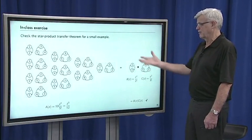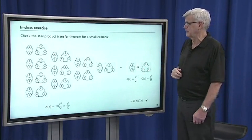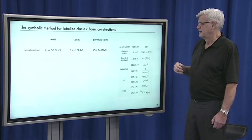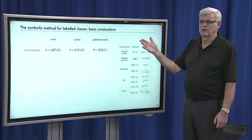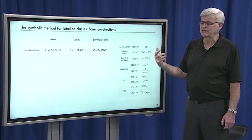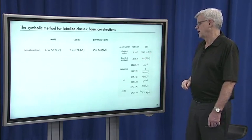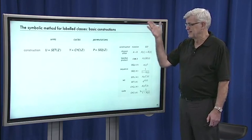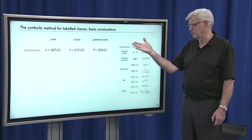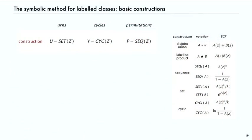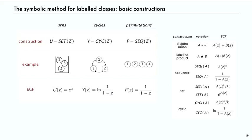That's a check for this small example and it works in general. The basic constructions are just applications of these basic theorems. An urn is a set of objects, a cycle is a cyclic sequence of objects, and a permutation is a linear sequence of objects. The transfer theorems immediately give us the generating functions without having to count. The EGF for urns is e to the z.